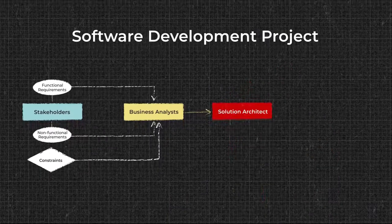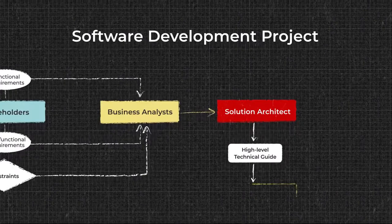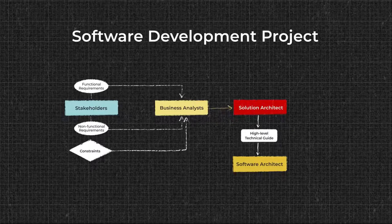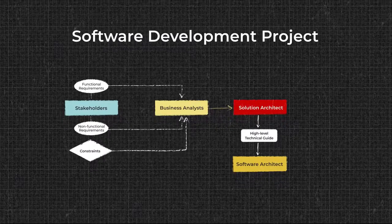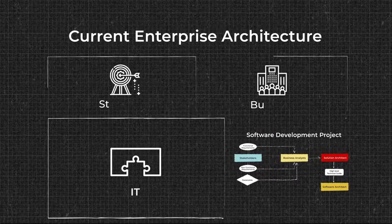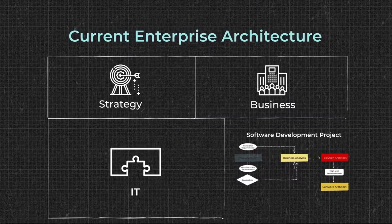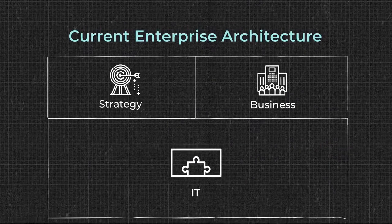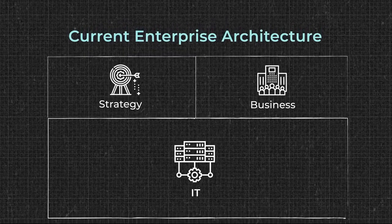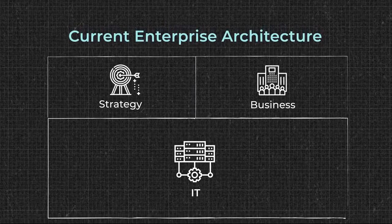A business analyst provides a solution architect with all these inputs, and the architect is responsible for converting them into a high-level technical guide. But there's an additional level of complexity: usually a product never exists alone. It must fit into the current enterprise architecture — other systems a company has been using before. For instance, if you use an old legacy system, your new product must be able to communicate with it. So a solution architect considers existing enterprise architecture to make sure a new product fits well in the existing ecosystem.